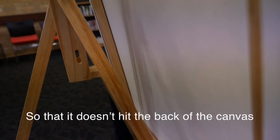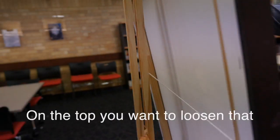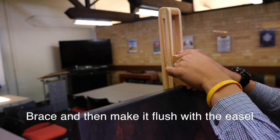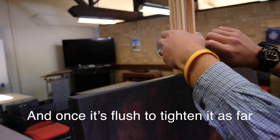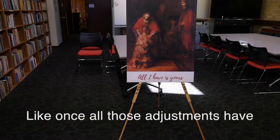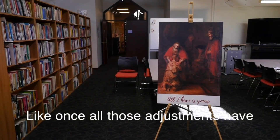On the top, you want to loosen that brace and then make it flush with the easel. Once it's flush, tighten that as far as possible. So that's what the canvas and the easel look like once all those adjustments have been made.